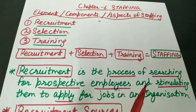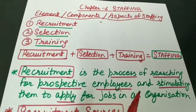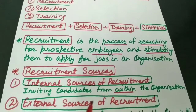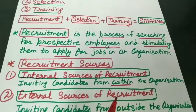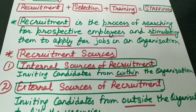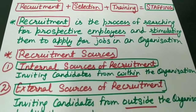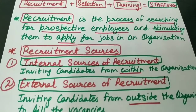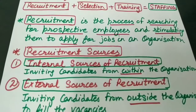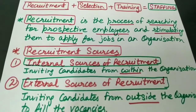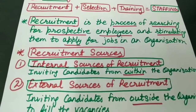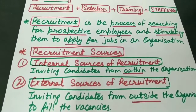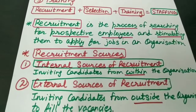From these applications, the organization can do the selection for the best candidate. There are certain sources of recruitment. The first source is internal source of recruitment and the second is external sources of recruitment. Internal sources of recruitment mein hum candidates ko invite karte hain from within the organization - yaani ki existing employees se hi vacant job positions fill ki jaati hain.